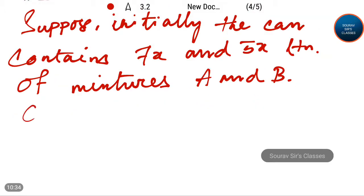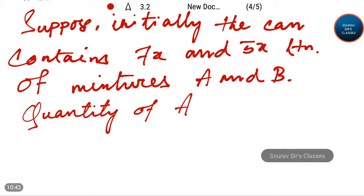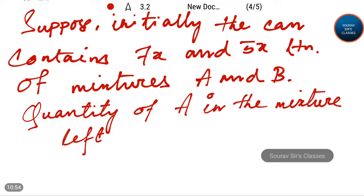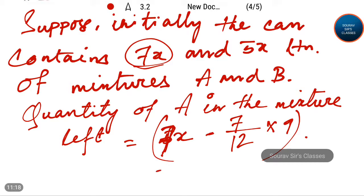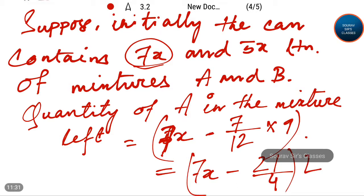The quantity of A in the mixture left is equal to 7x minus 7 by 12 into 9. That is equal to 7x minus 21 by 4 liters.